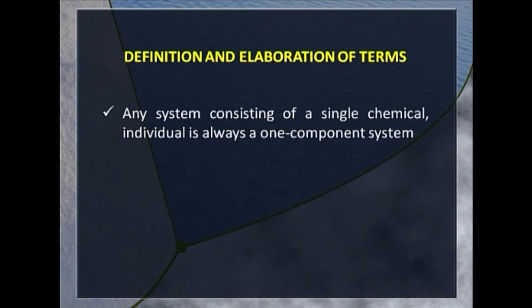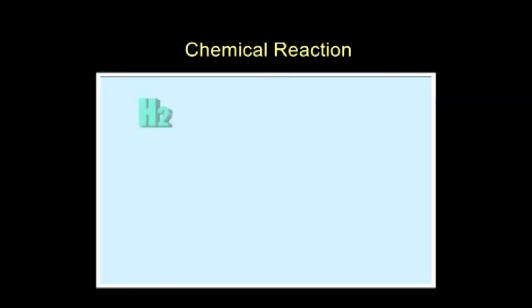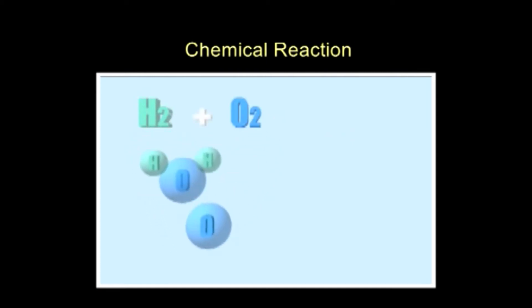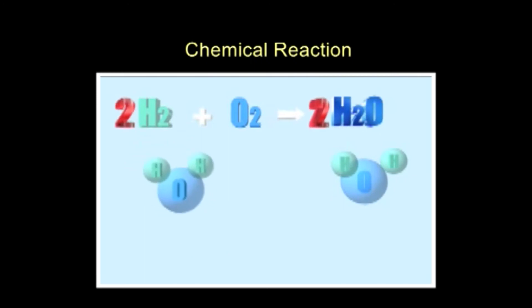Take ice, liquid water, and water vapour in equilibrium — it is a one-component system. Some may ask: H2O is made up of hydrogen and oxygen, why not take them as constituents? But if we specify how much hydrogen is present, the amount of oxygen is automatically fixed because the two are related by the formula H2O — that means twice H for each oxygen.